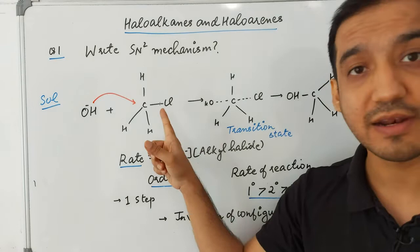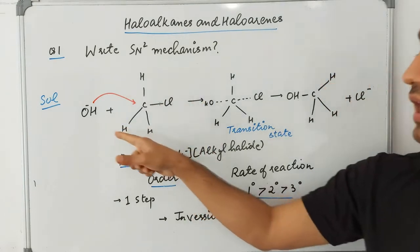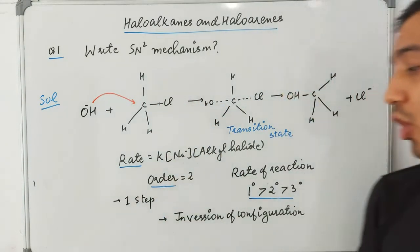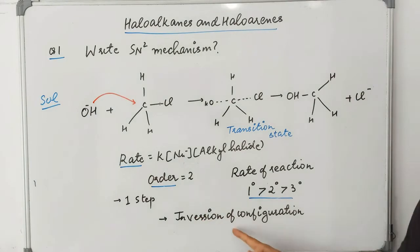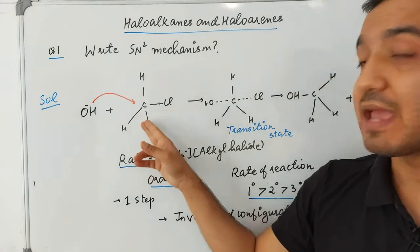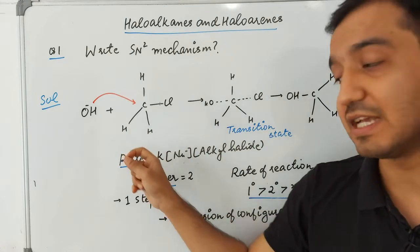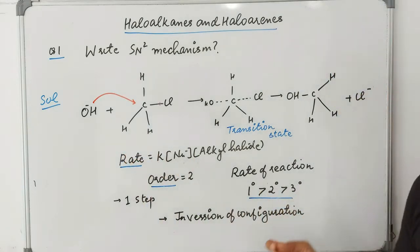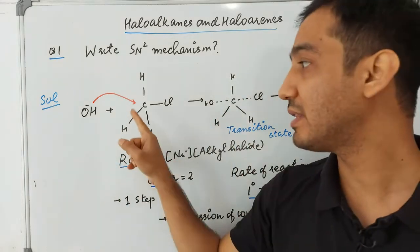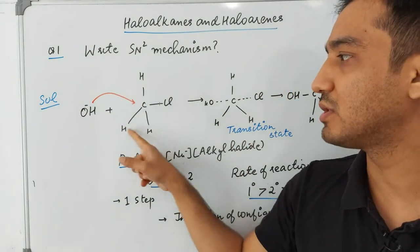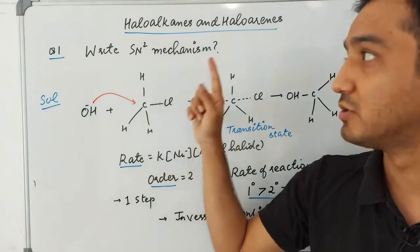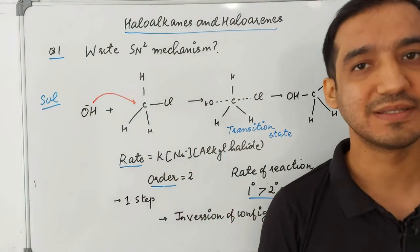In SN2, Cl is on the right side but OH comes on the left side, so the nucleophile position has changed — we call it inversion of configuration. Regarding rate of reaction, primary alkyl halide shows the fastest and tertiary shows the slowest SN2 reaction, because in primary there is less steric hindrance — only hydrogen is present so OH can easily attack.